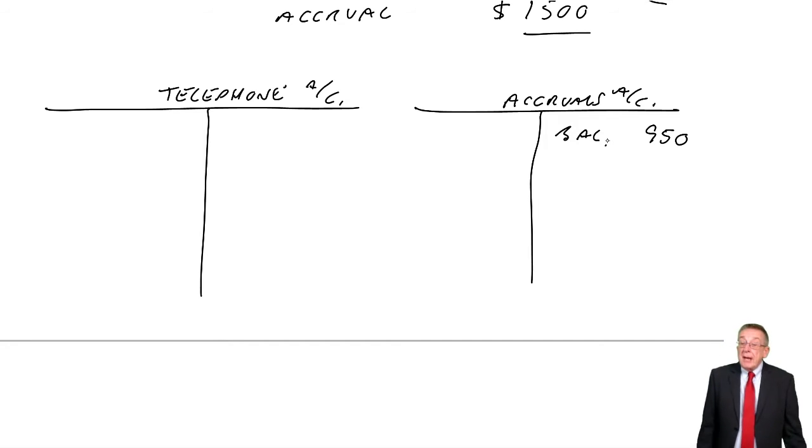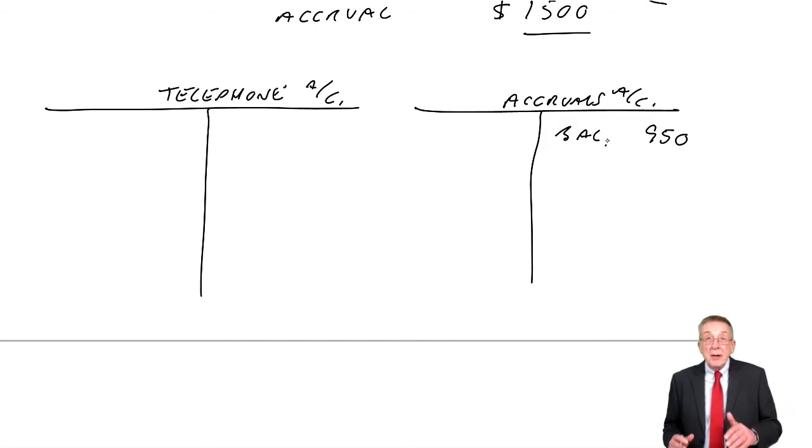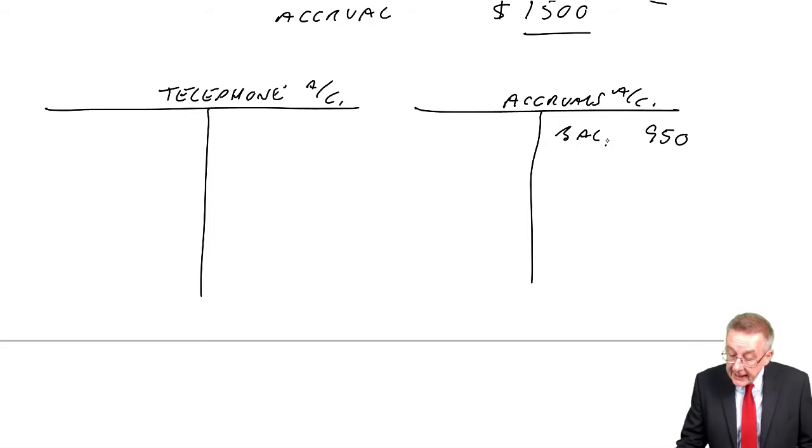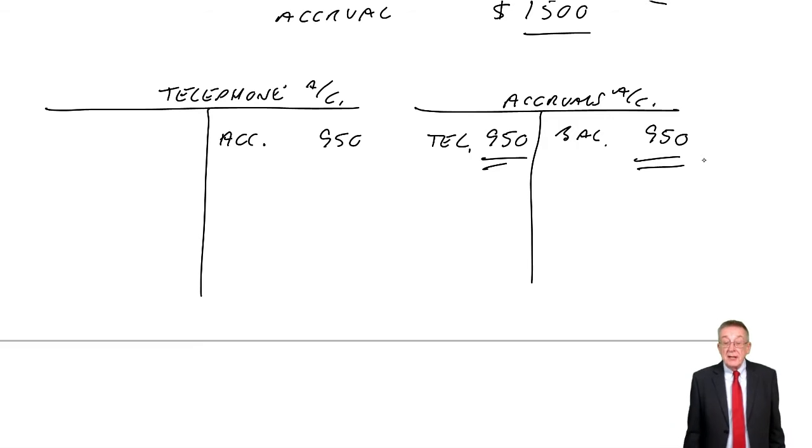Well, now let's move into this year, and the first thing the accountant does, a bit like we did with prepayments, before we give the books back to the bookkeeper, we reverse the accrual. Take out the accrual, 950, debit accrual, credit telephone. The balance on accruals is now zero. Now, the reason is a bit less obvious than it was with prepayments, but it'll become very obvious in a moment. But that's what we do on the first day of the new year.